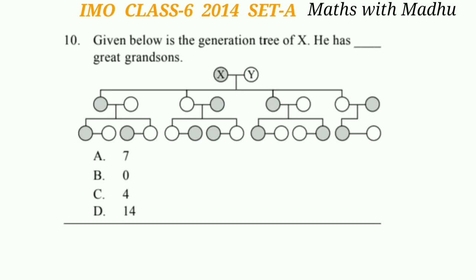Question 10: Given below is the generation tree of X. How many great grandsons does he have? Looking at the figure, X has 14 grandsons, but we need to find the great grandsons. X has no great grandsons, so the answer is option B, which is 0.